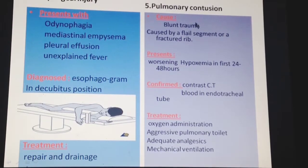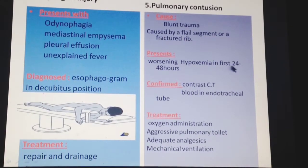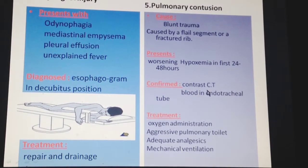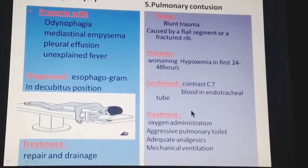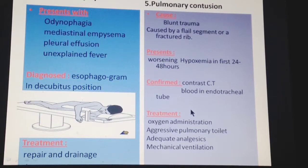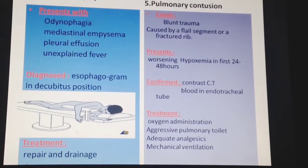Pulmonary contusion is caused by blunt trauma, often associated with a flail chest segment or fractured ribs. The patient presents with worsening hypoxemia in the first 24 to 48 hours. It is confirmed by CT scan or blood in the endotracheal tube. Treatment includes oxygen administration, aggressive pulmonary toilet, anticholinergics, and mechanical ventilation.